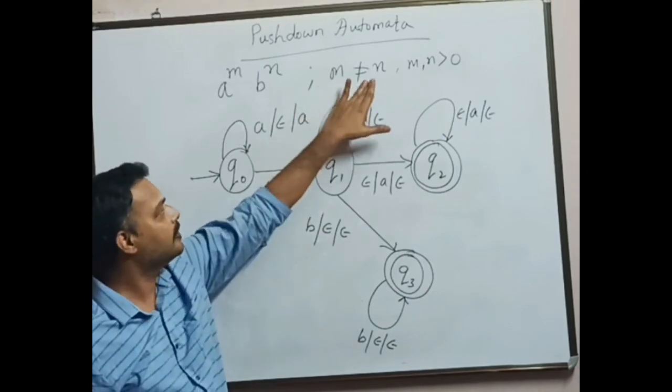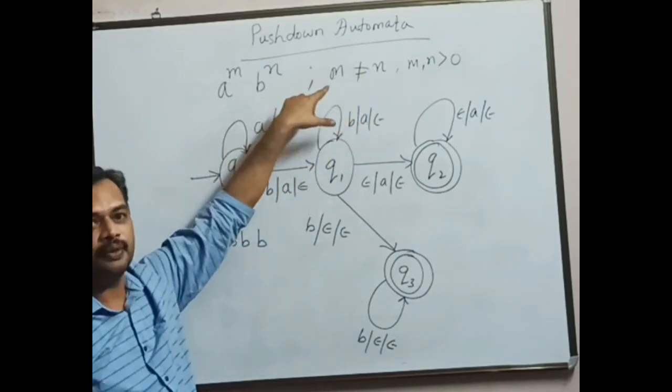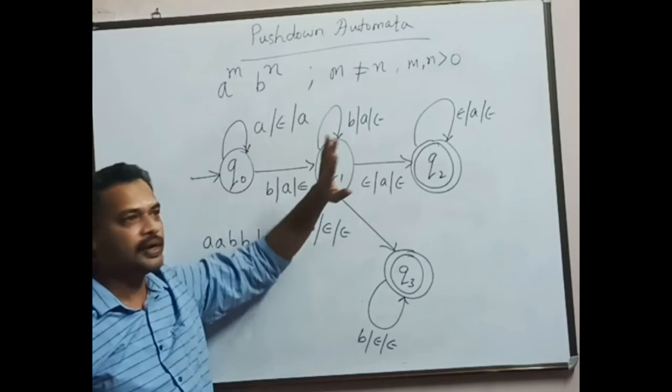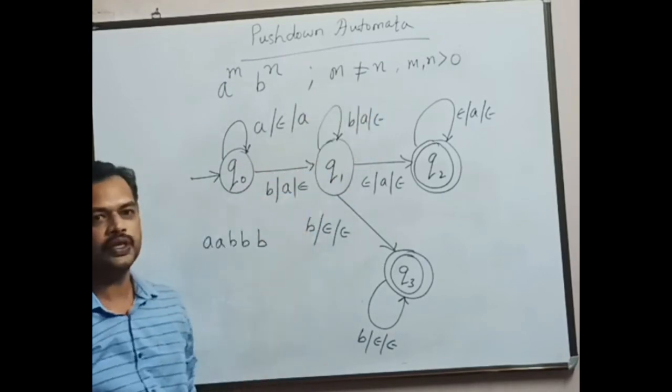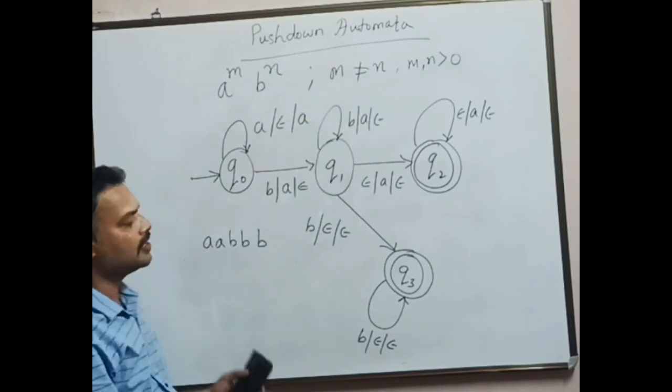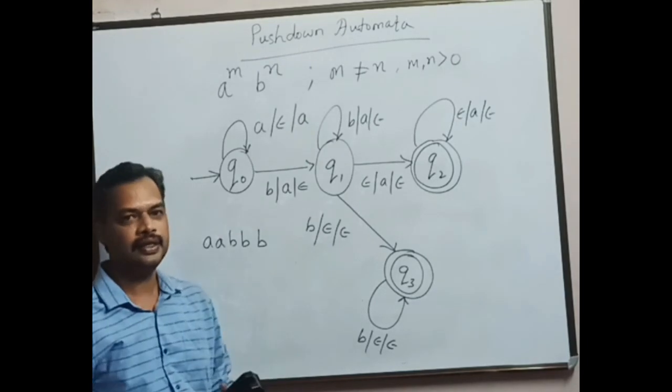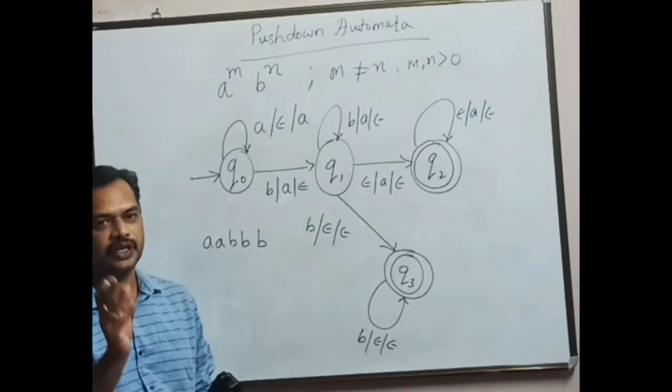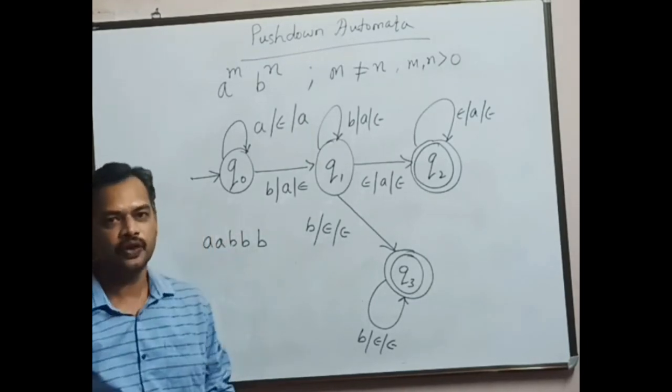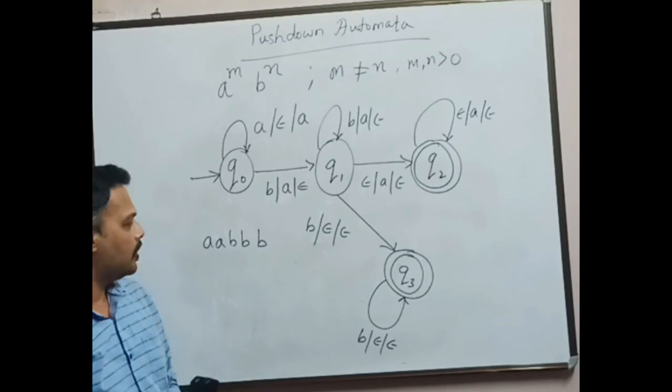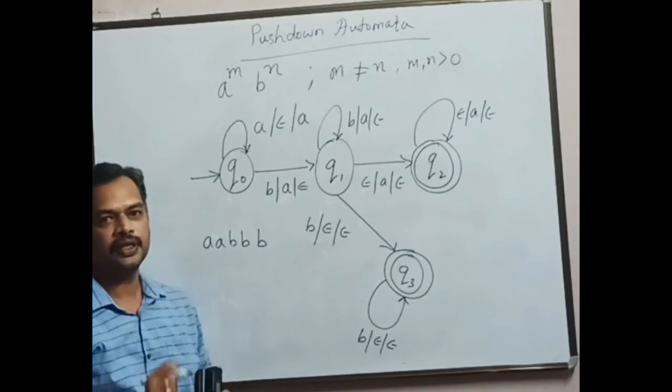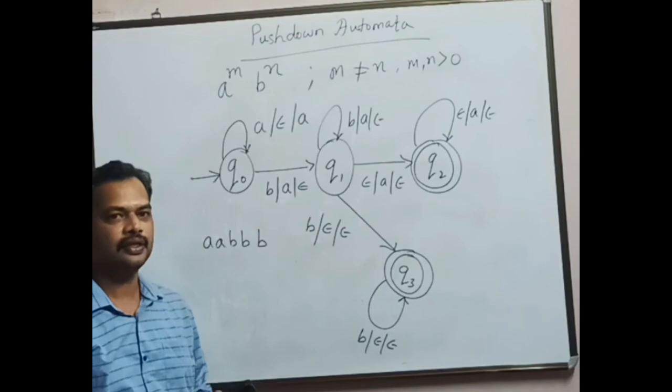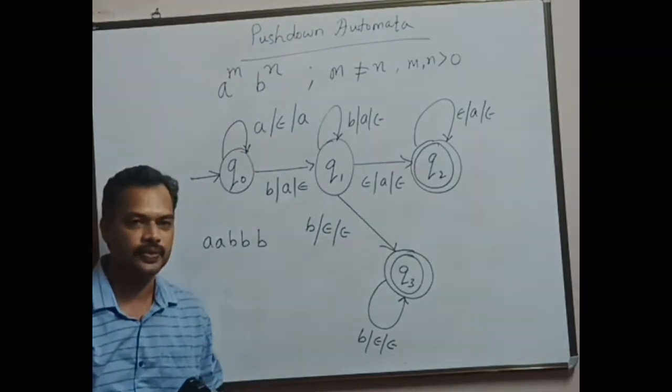So the same design will address two different situations: the first situation m greater than n, and the second situation m less than n, which is nothing but m not equal to n. For this PDA also, you are supposed to write delta transition descriptions, which I have already given in the previous video. I hope you understood the solution that we have designed here. Thank you.